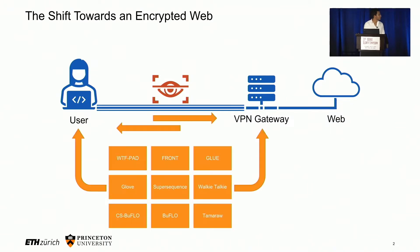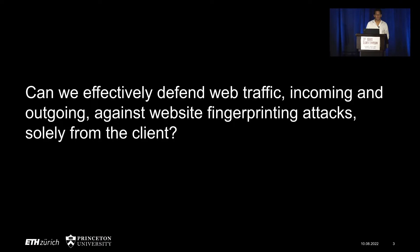As a result of these attacks, several defenses have been proposed in the literature. However, the need to defend both directions — both from the client to the proxy as well as from the proxy to the client — has essentially meant that these defenses would have to be deployed both at the user as well as some remote place in the network. This is obviously a hindrance to deployment, as it requires something outside of the client's control. In our work, we ask the question: can we effectively defend web traffic, both incoming and outgoing, against website fingerprinting attacks solely from the client — without requiring any changes to the server or the deployment of any new network services?